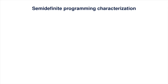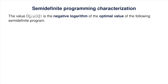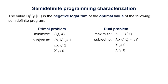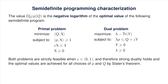There is a semidefinite programming characterization of the hypothesis testing relative entropy. Specifically, the epsilon hypothesis testing relative entropy of rho with respect to q is the negative logarithm of the optimal value of the semidefinite program shown here. The primal problem comes directly from the definition, and computing the dual results in what is shown here. Both problems are strictly feasible when epsilon is in the open interval from 0 to 1, so strong duality holds by Slater's theorem. We also have strong duality in the extreme cases epsilon equals 0 and epsilon equals 1.